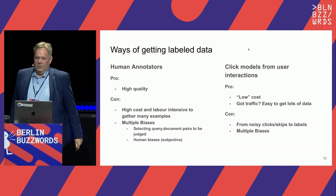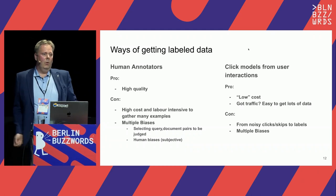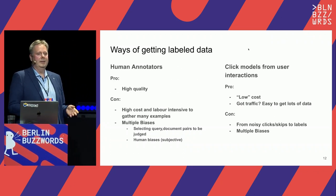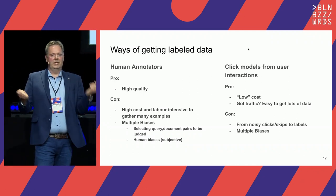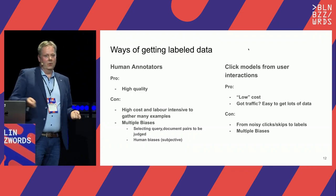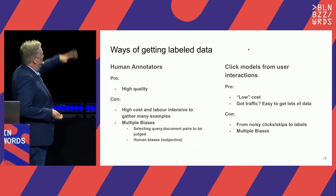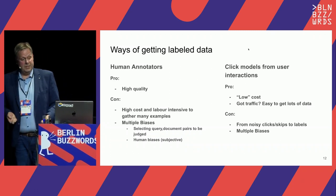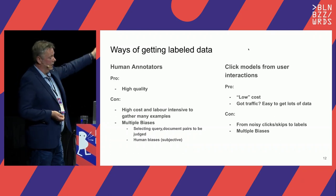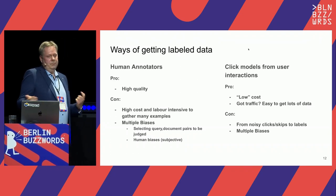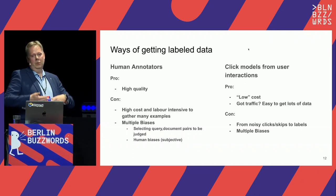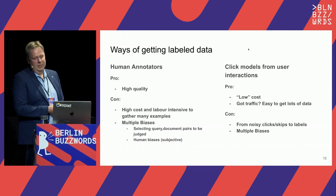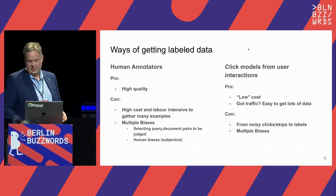With human annotators, you ask people to rate search results: given a query and a document, how good is this document for this query? You might grade it as excellent or not so good depending on the task. The pro is that you get quite good, high-quality labeled data. The downside is that humans are expensive because they need to be paid. There are also biases — when you have a billion documents, you can't show them all to everyone, so you have selection biases, plus relevance is subjective.